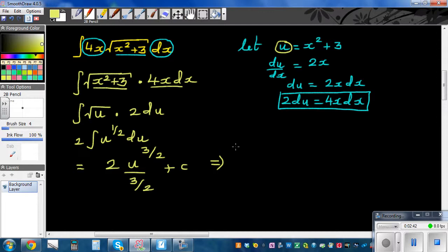Let's simplify this. This is equal to 2 times—two divided by three halves is the same as two times two thirds—times u to the power three halves plus C. So this is four thirds times u to the power three halves plus C.